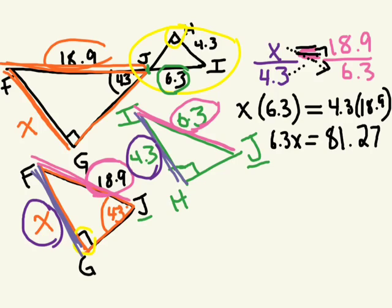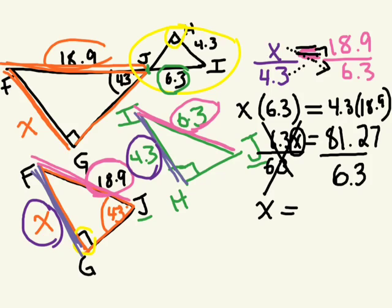But I need to isolate X. So now what do I have to divide this side by? Right, 6.3. That's how I can cancel this out. But because I divided the left side by 6.3, I have to do it also to the other side. Right. We have to divide the right side by 6.3. So we're just left with X. Divide by 6.3. So we have X. Now we're going to do 81.27 divided by 6.3 to get the final answer.